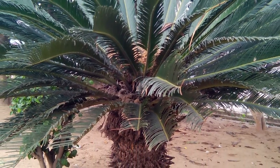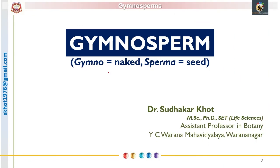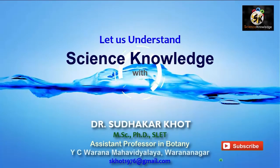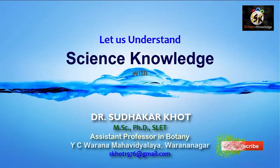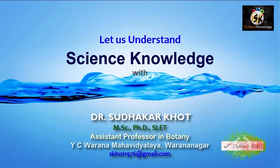Today their distribution is restricted to certain spaces on the earth, and they are represented by only a few living genera. In this video we will discuss the general characteristics of gymnosperms, and during this discussion you will come to know why they are restricted and why many species became extinct.